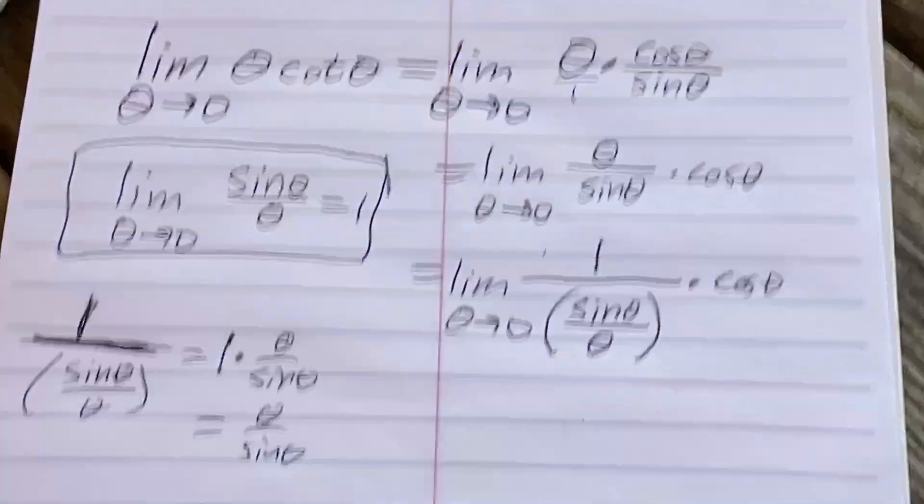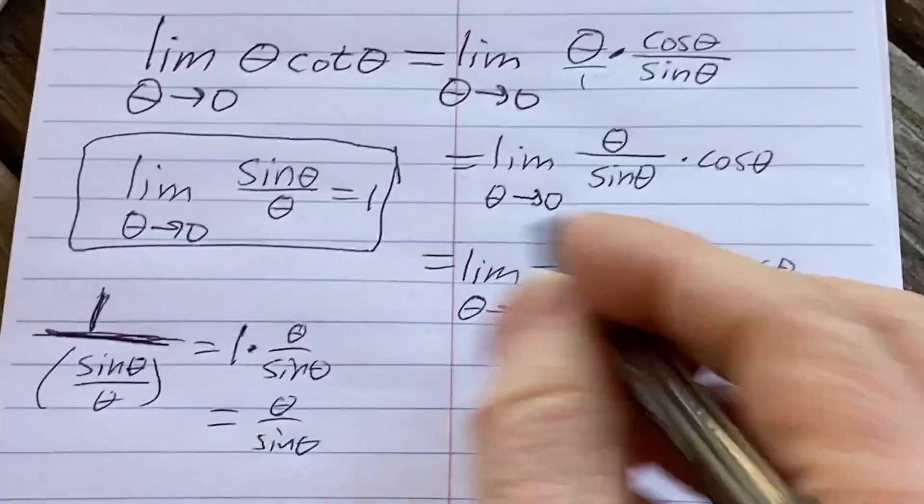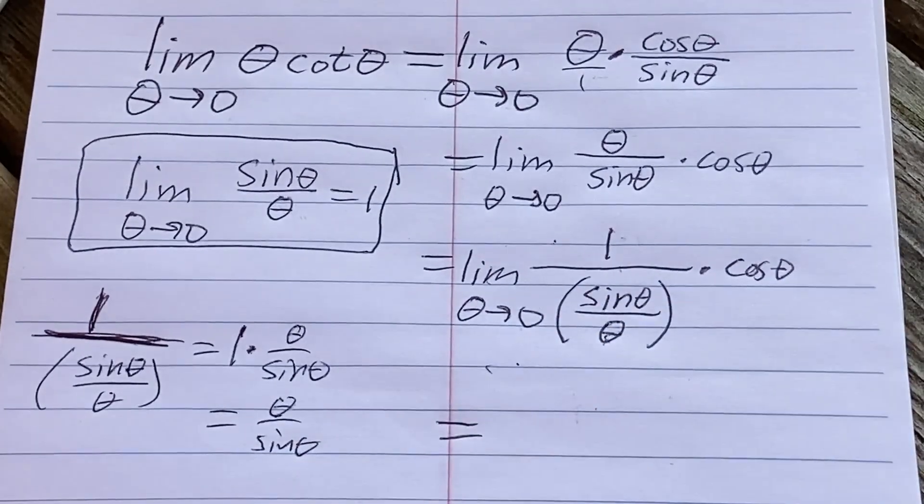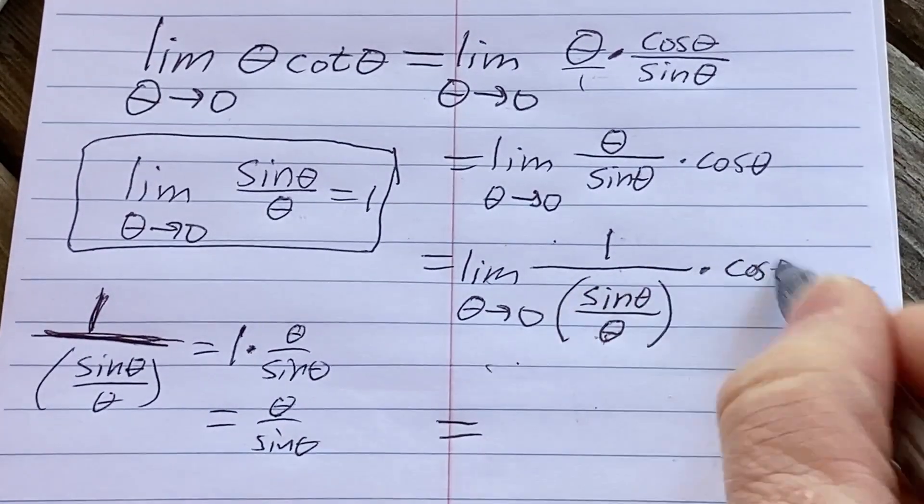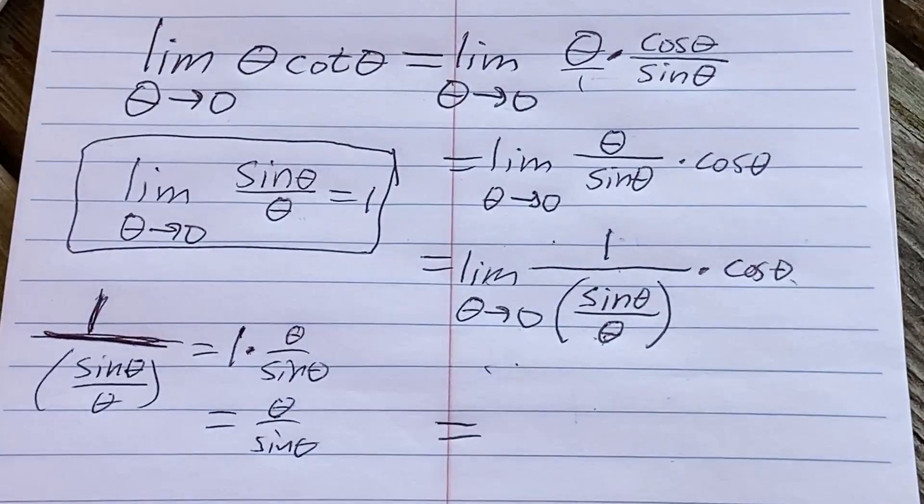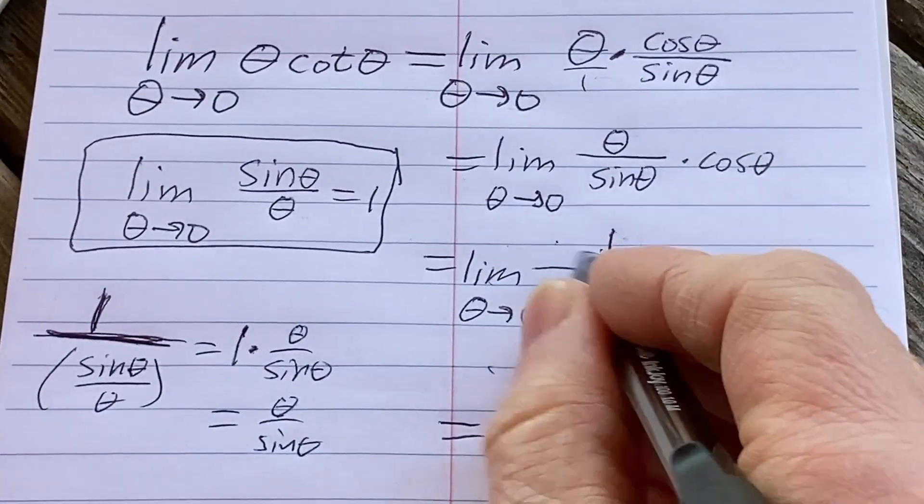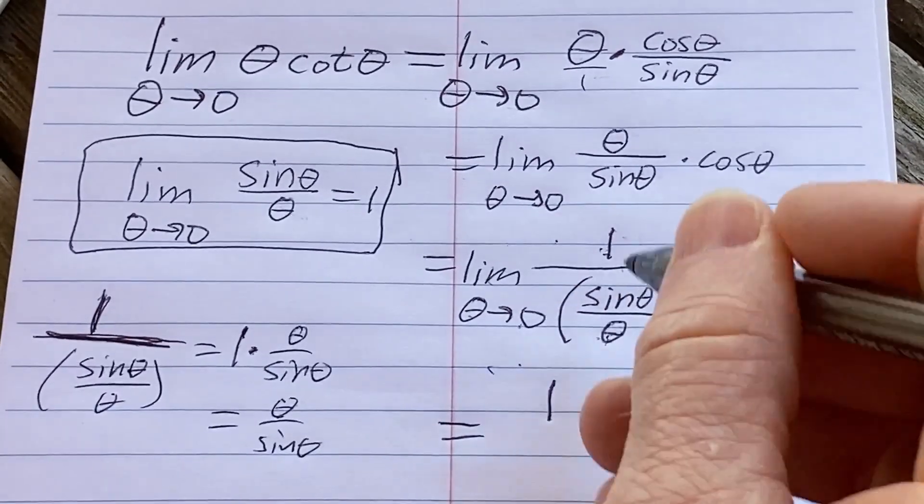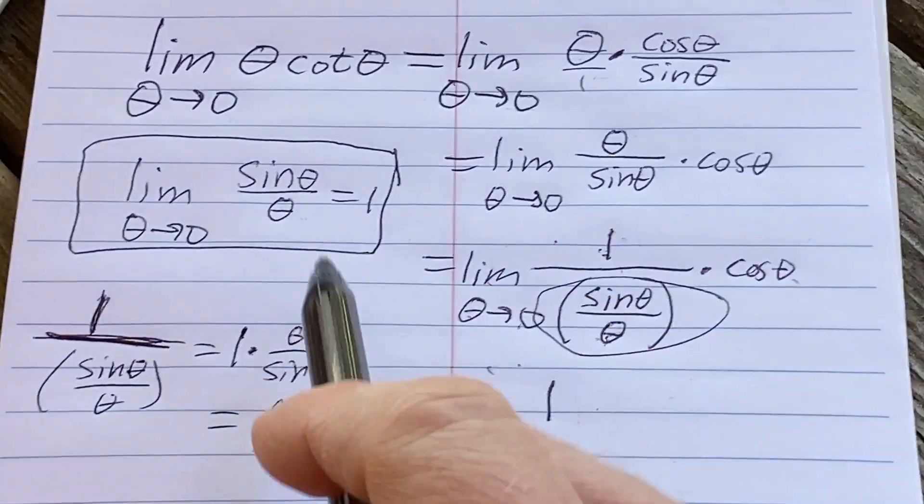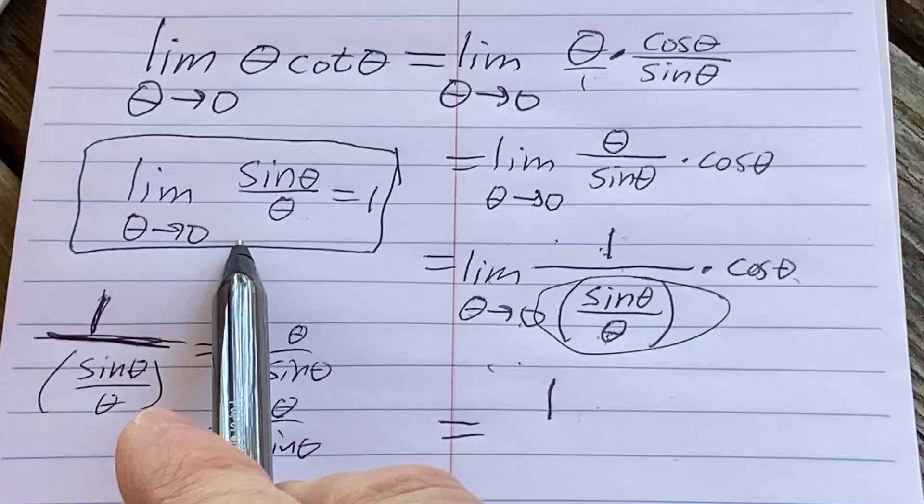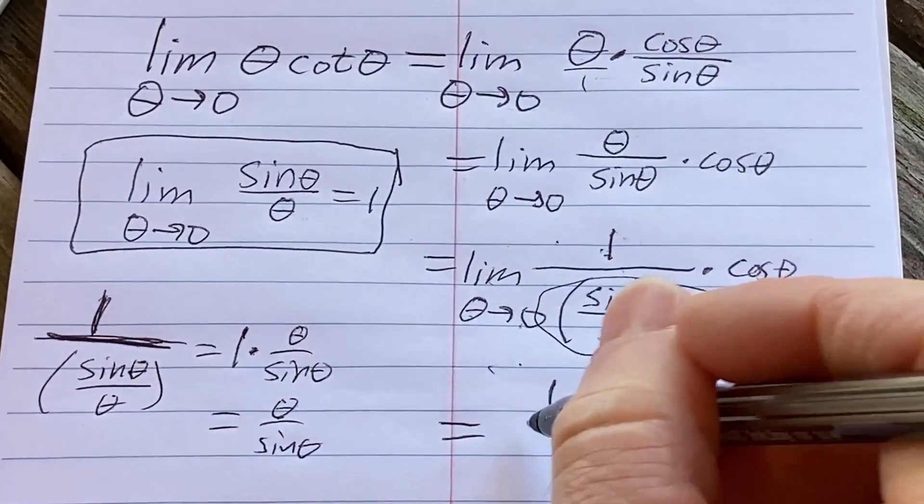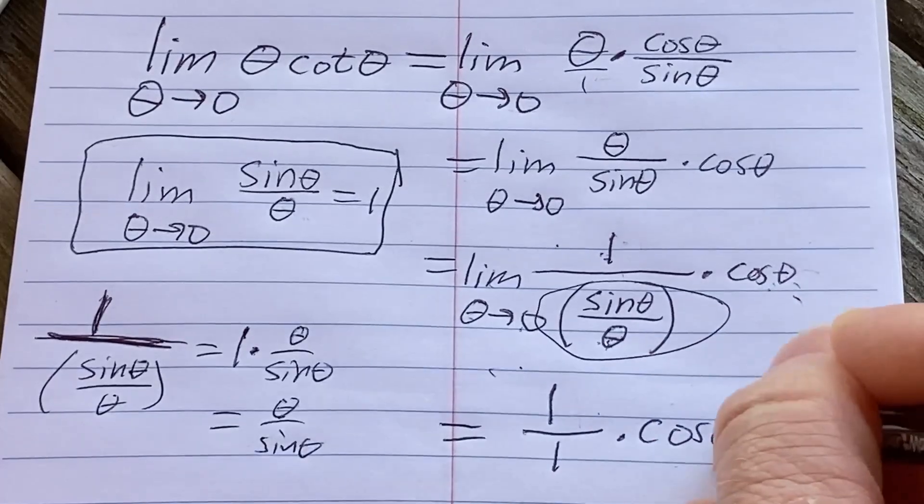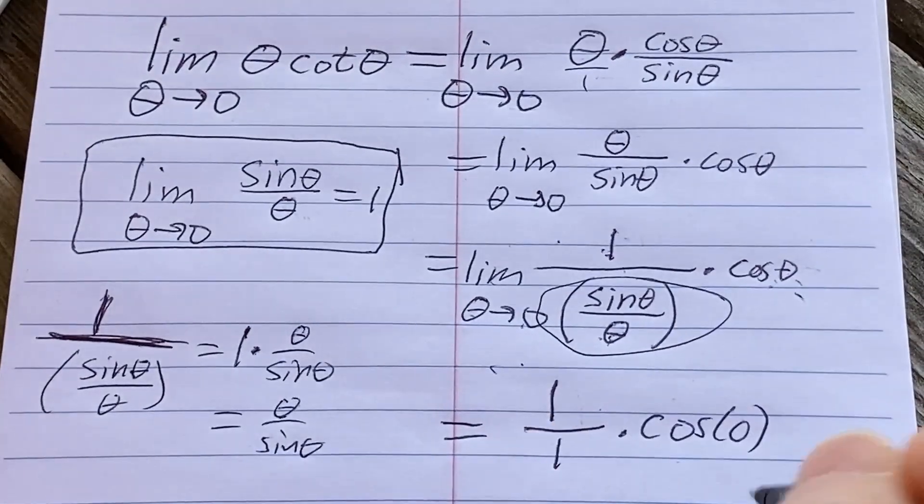So this is equal to, now you can just take the limit of each piece right, that's using the limit laws. As long as each individual piece exists, there's limit laws that you can combine that will allow you to do this. Taking the limit as theta approaches zero of one, well it's just going to be one. This limit down here, boom we're going to use our super powerful mathematical powers, this is going to be one. And then this is a continuous function so you can just plug it in, evaluate it at zero.